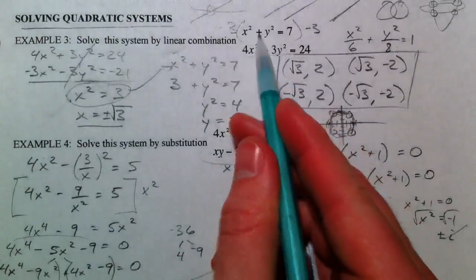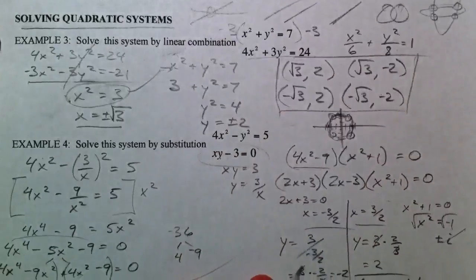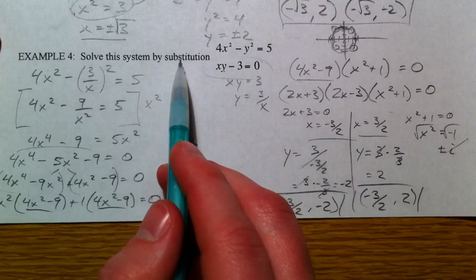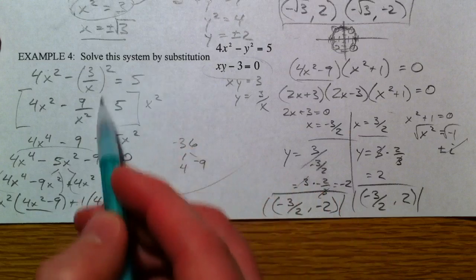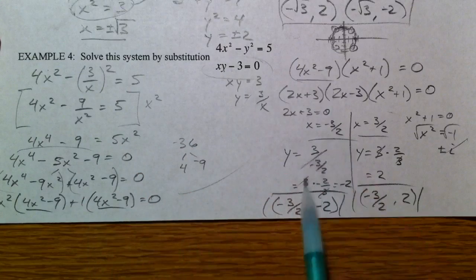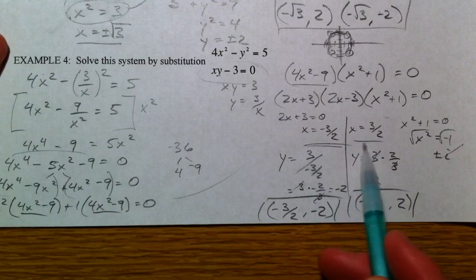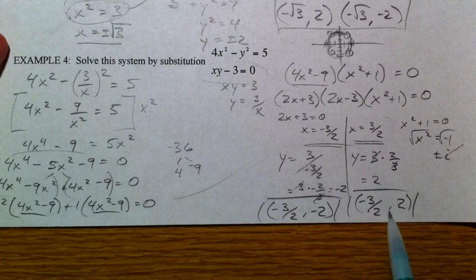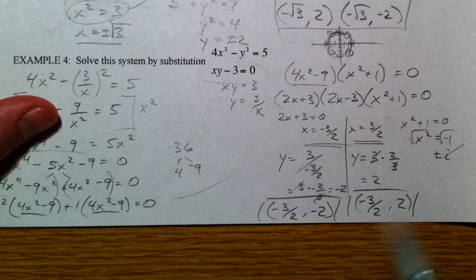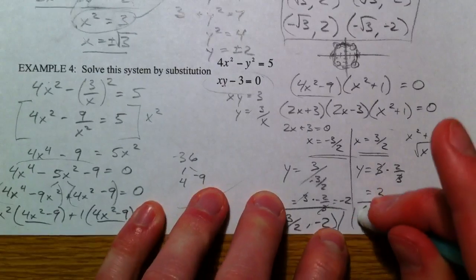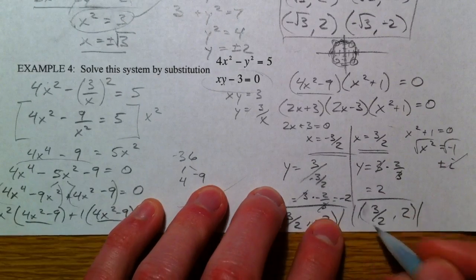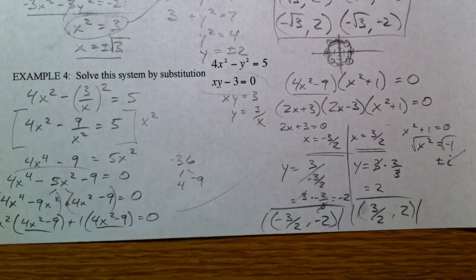So you've got two methods: linear combination, where you multiply an equation by something to cancel a variable out; or substitution, where you solve for one variable and plug it in. Sometimes one will be easier than the other — I wanted to show a more difficult problem to refresh some skills. The goal is also to stay organized, because with two x values you need to track which y goes with which x. Happy studying.